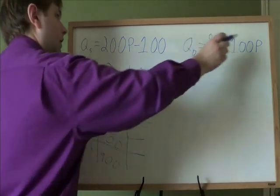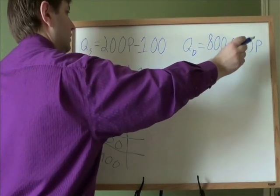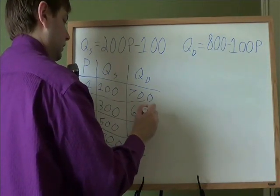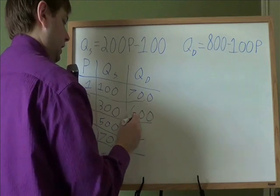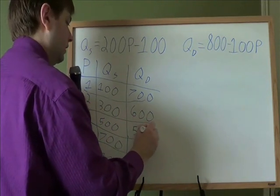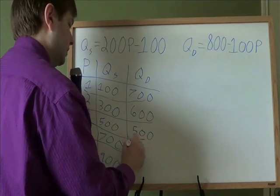If they're $2, we'll plug a 2 in there, 100 times 2 is 200. 800 minus that 200 is 600. And so on. You can get a calculator out and do these. I've done them beforehand. So I'll just let you know that these end up being the answers.